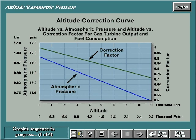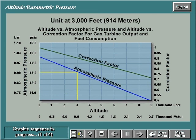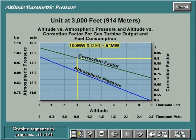This graph shows the effects of altitude and barometric pressure on gas turbine performance. A decrease in air density reduces mass flow and output proportionally. Heat rate is not affected. For example, a unit installed at an altitude of 3,000 feet would require an atmospheric pressure correction of approximately 13.2. The correction factor for the output and fuel consumption would be approximately 0.91. If a gas turbine with a nameplate rating of 100 megawatts is installed at this altitude, the expected output would be 100 times 0.91, equaling 91 megawatts.